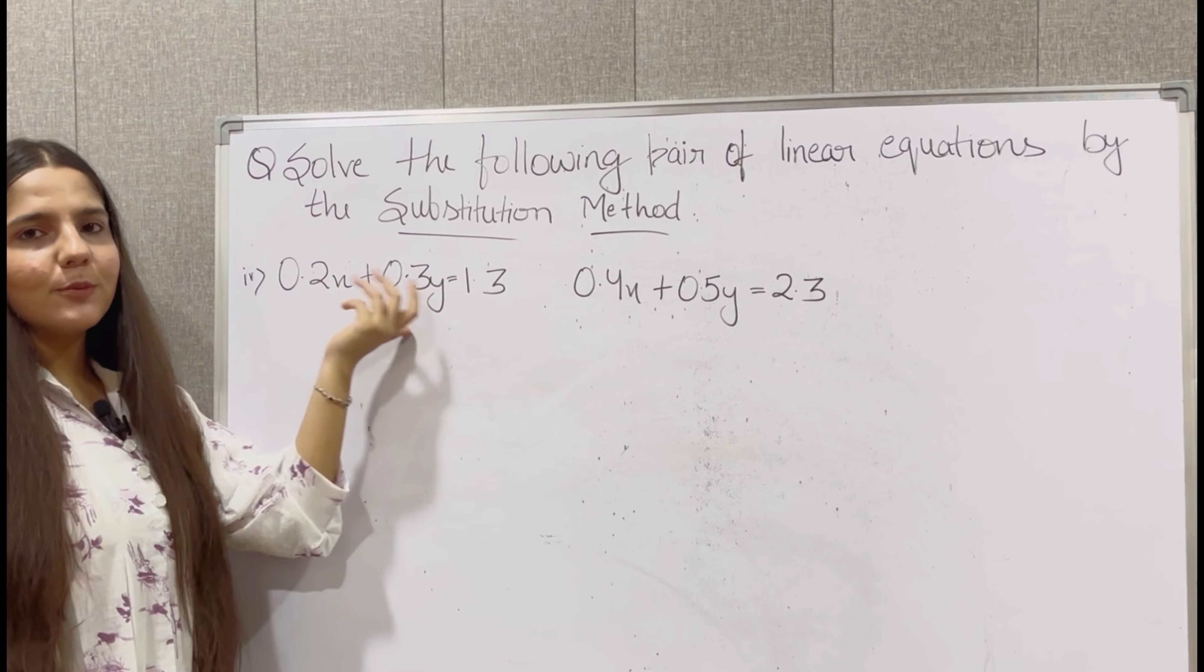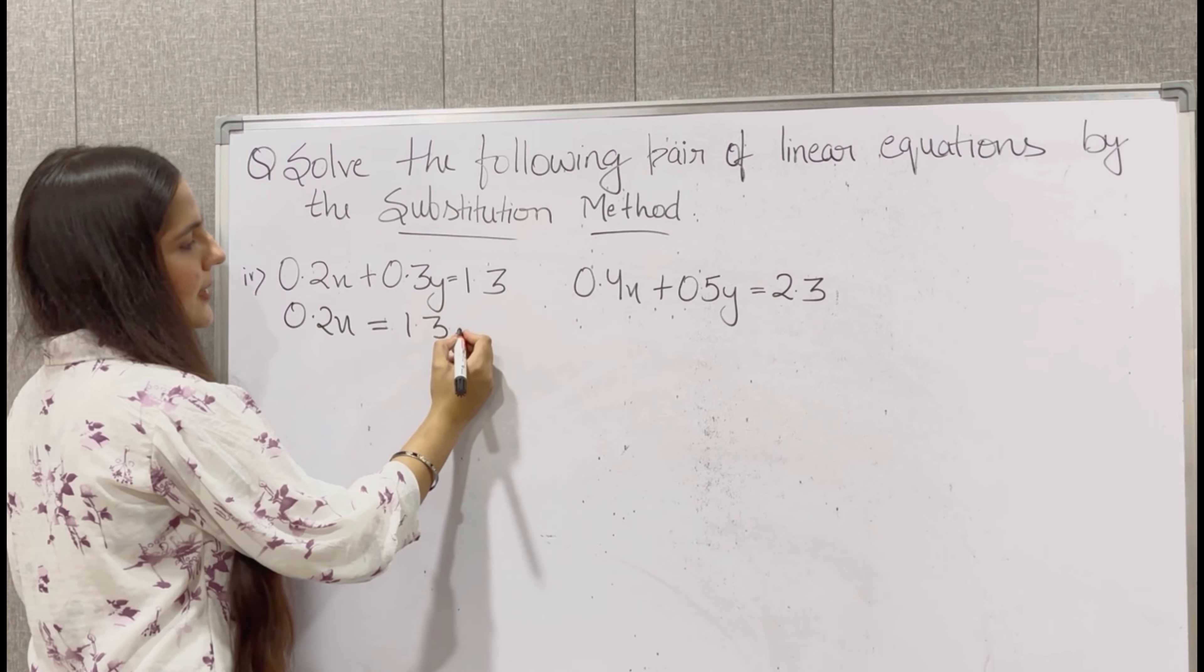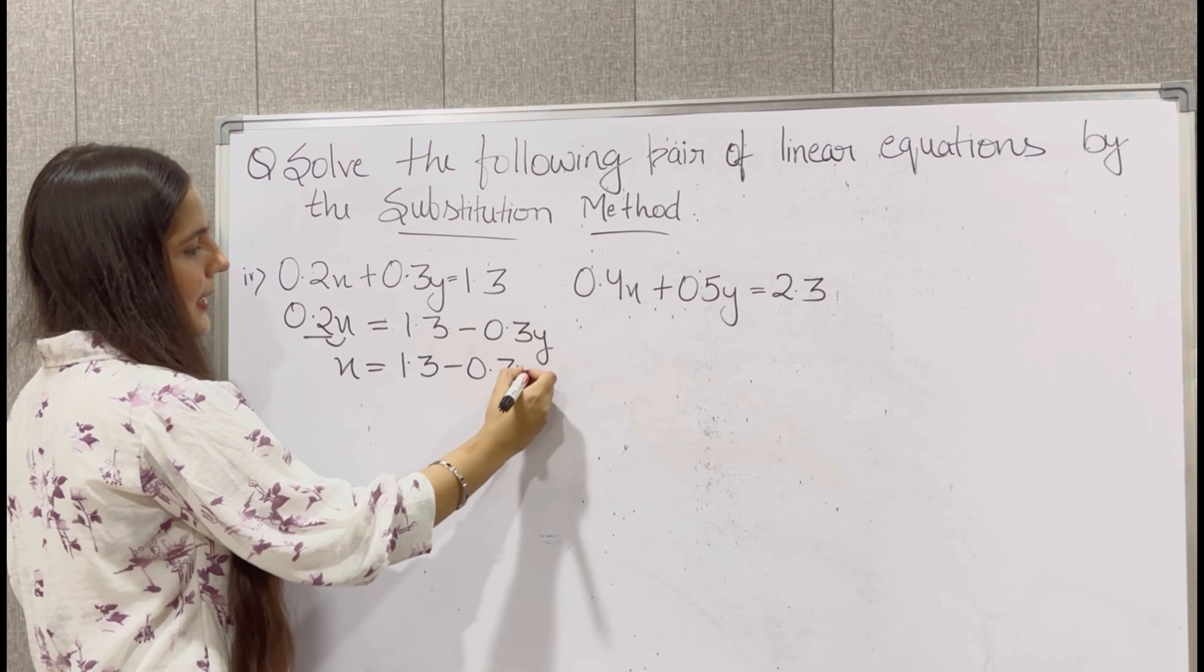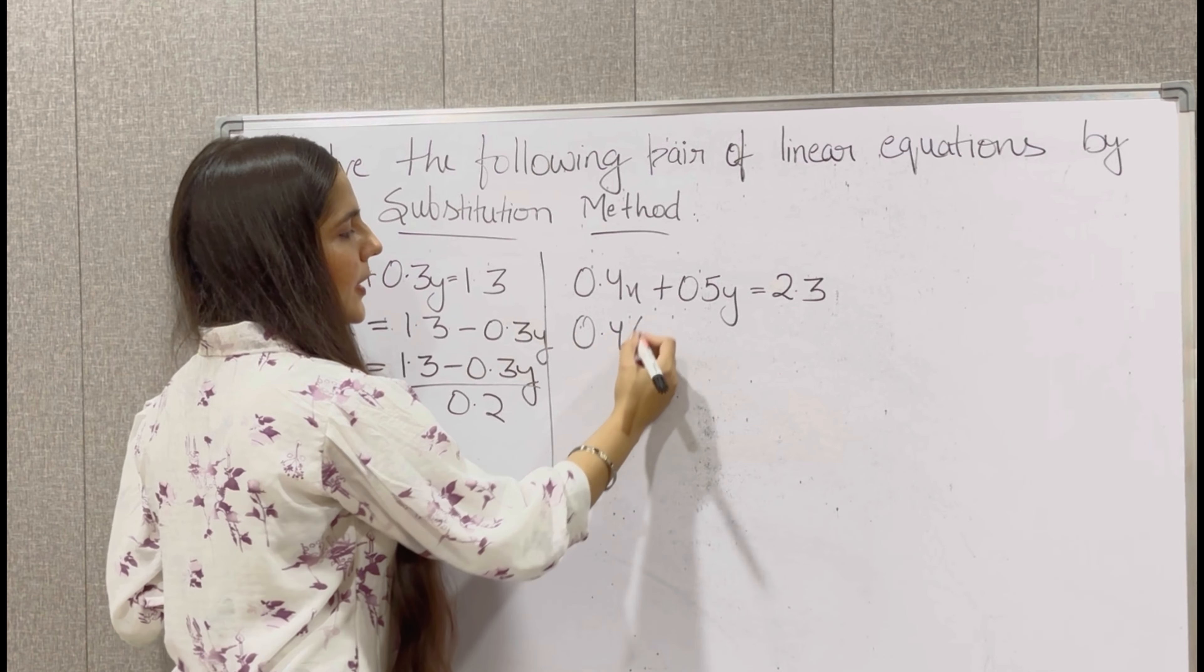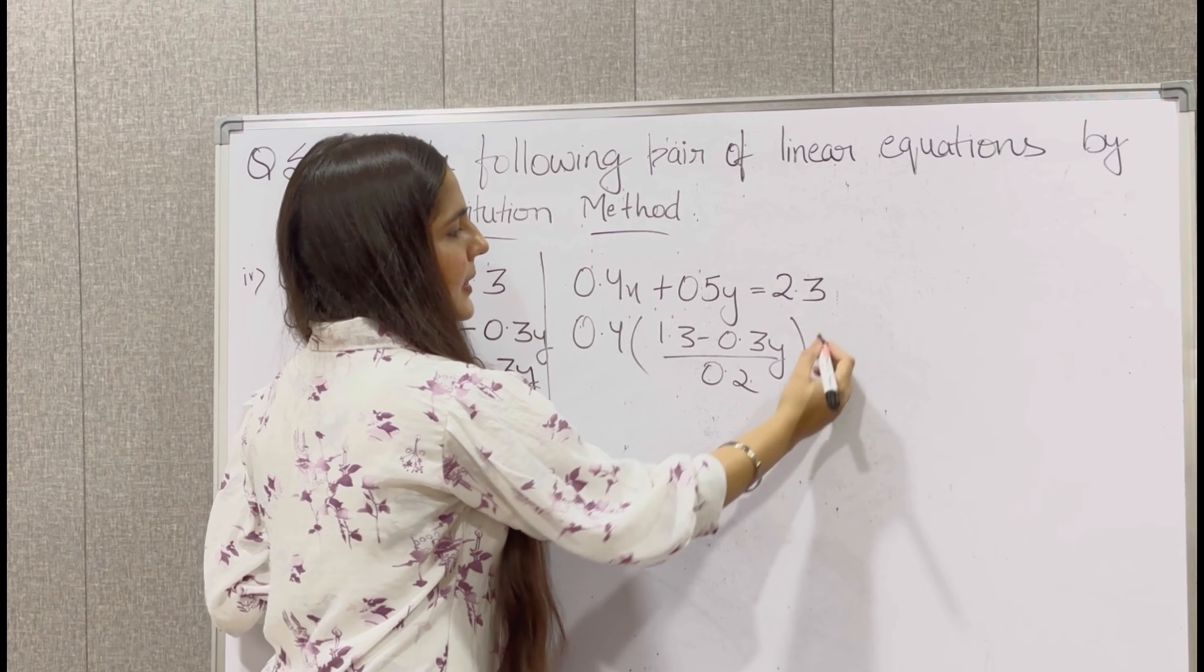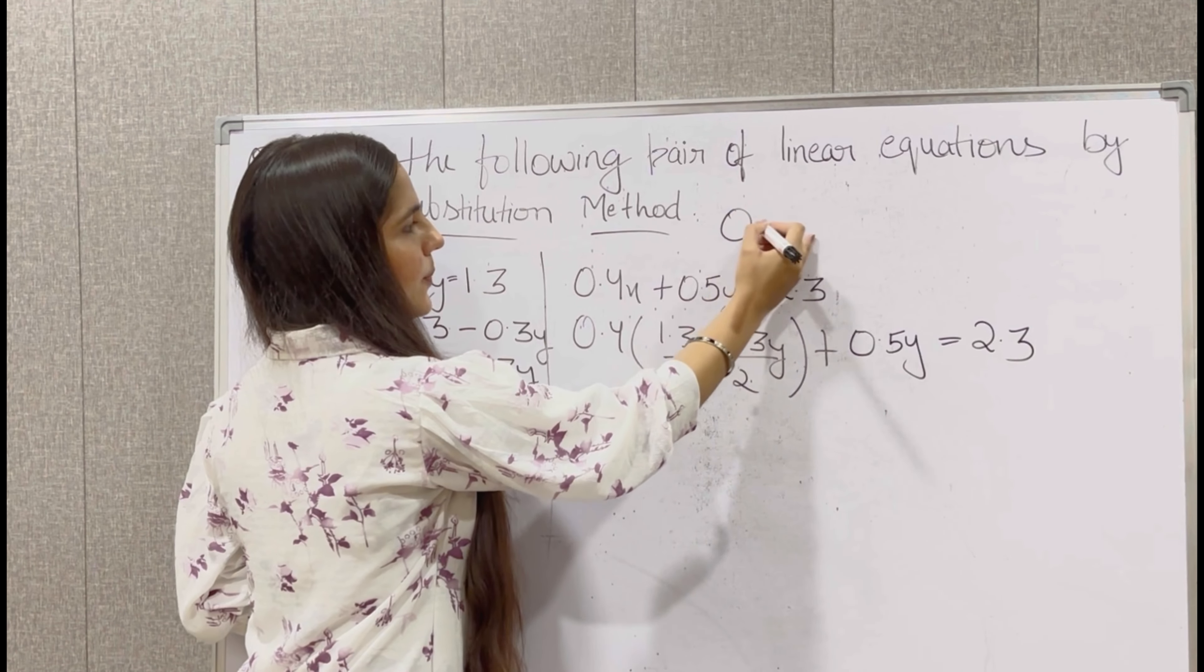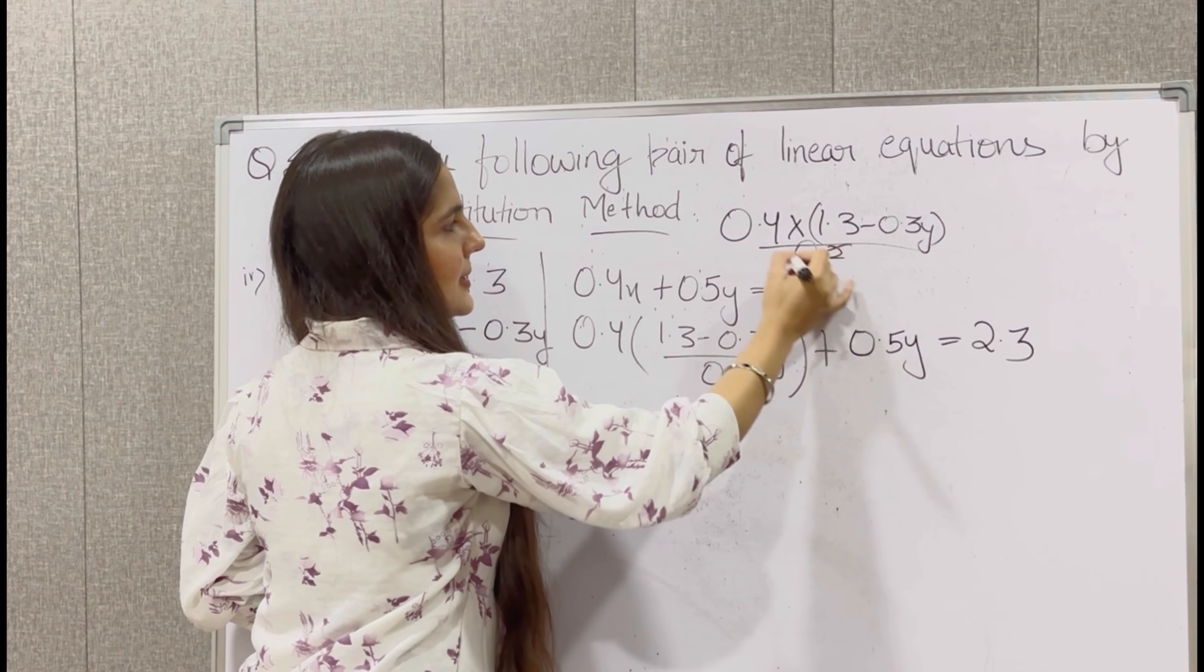Now let's solve its next part. Now let's take out the value of x from the first equation and put it in the second. So 0.2x is equal to 1.3. This plus will go to minus, minus 0.3y. Now this 0.2 is in multiplication with x. We will transfer it and it will go in division. So x is equal to 1.3 minus 0.3y divided by 0.2.